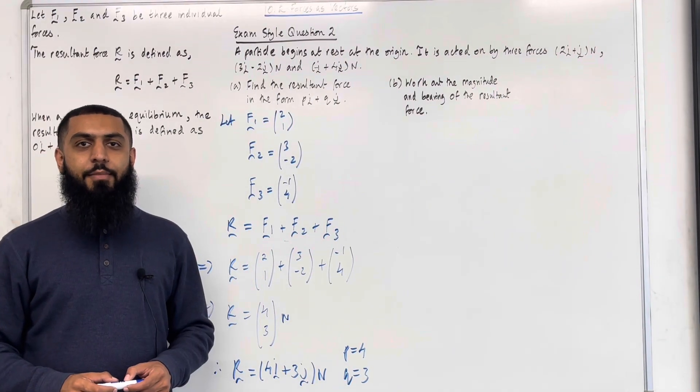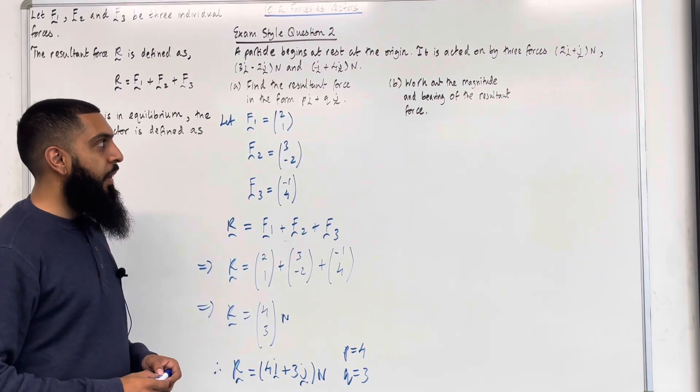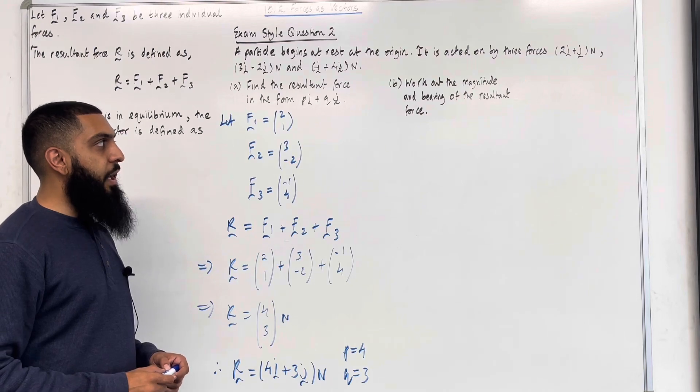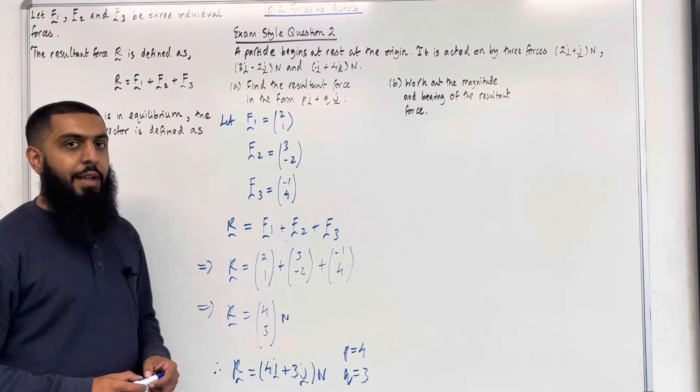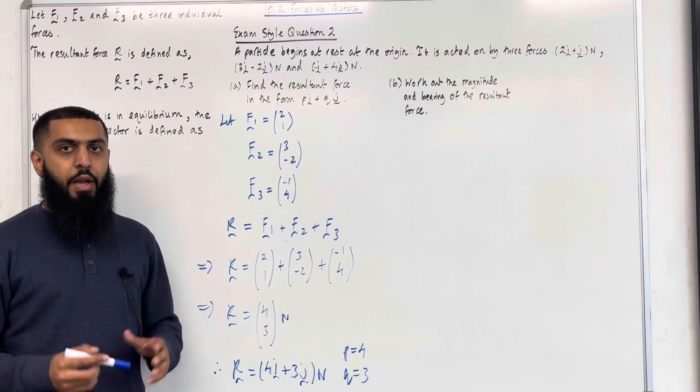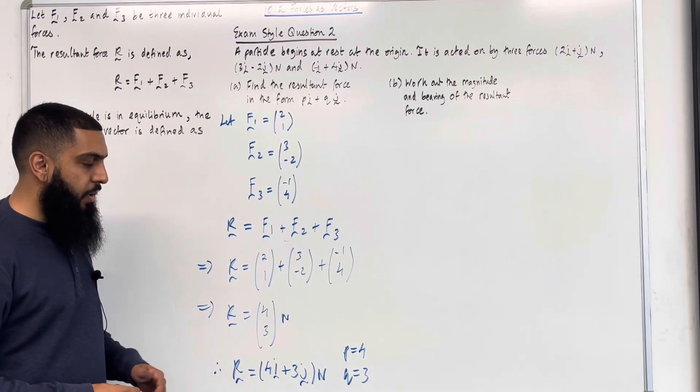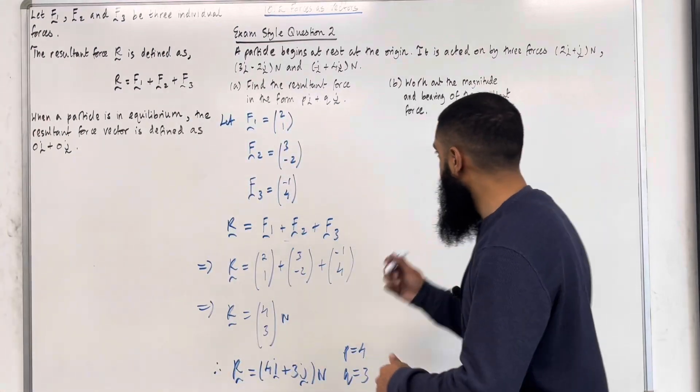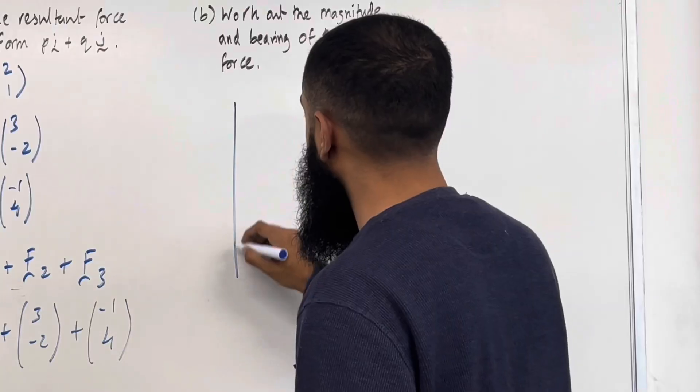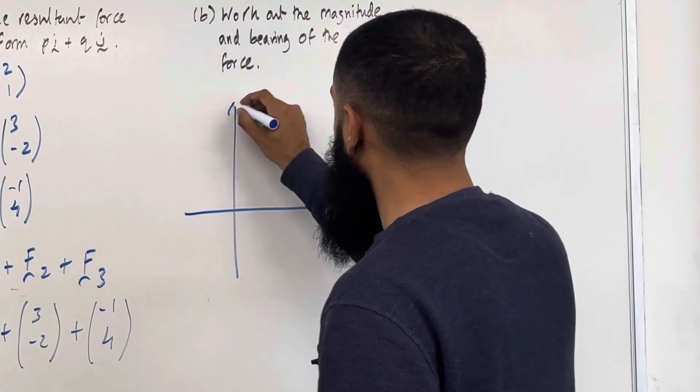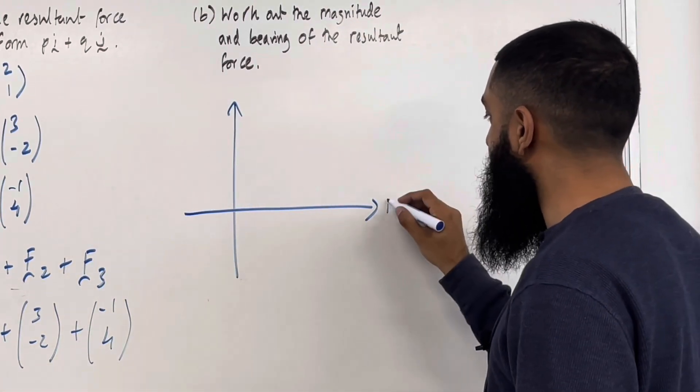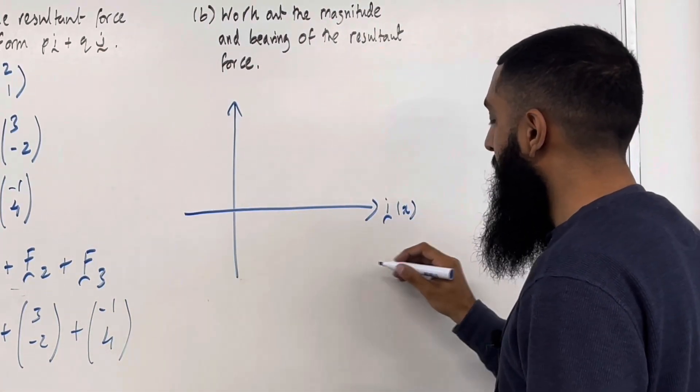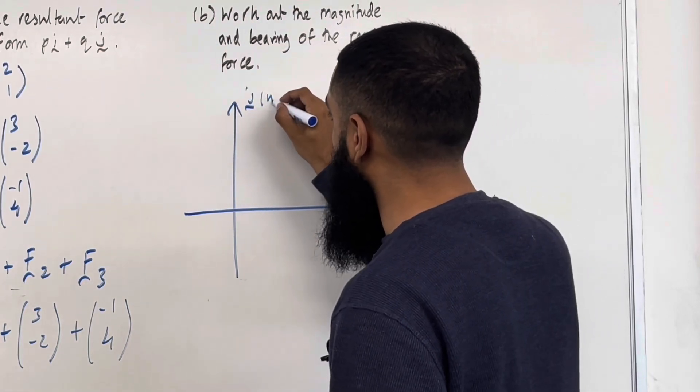Moving on to part B of exam style question 2. Work out the magnitude and bearing of the resultant force. Let's have a look at the solution. I'm going to start by drawing the resultant force 4I plus 3J Newtons on a coordinate grid. Here is my coordinate grid. The horizontal axis represents the I axis, which is X. The vertical axis represents the J axis, which is Y.